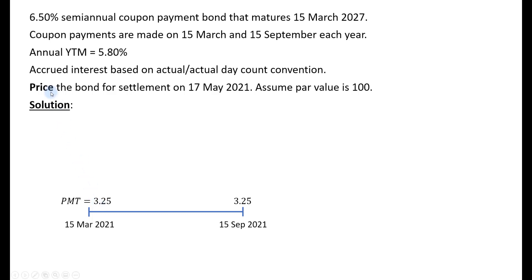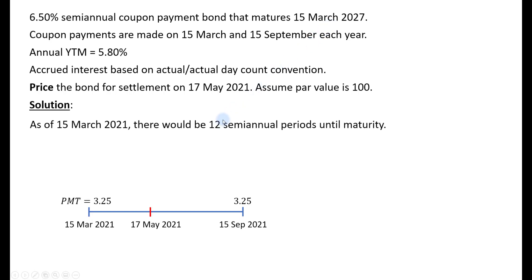To get the full bond price on 17 May 2021, we first calculate the present value of all remaining cash flows as of 15 March 2021. From 15 March 2021 to maturity on 15 March 2027 is 6 years, which equals 12 semi-annual periods. So we'll calculate the present value of 12 coupons plus one face value at maturity.